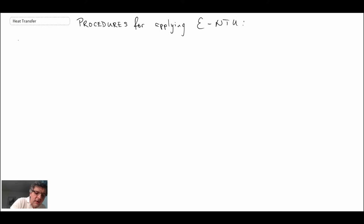So the first type of problem we're going to look at is referred to as the rating problem. If you recall, this is the problem that we ran into some trouble with when we applied the LMTD. So typically you know the following information for this type of problem.